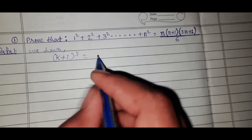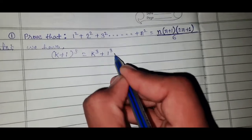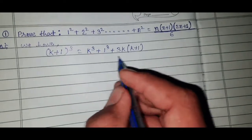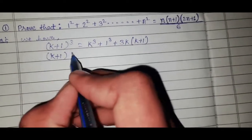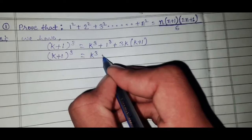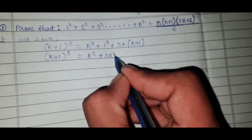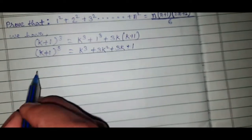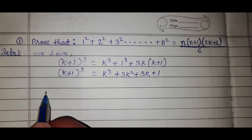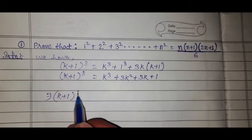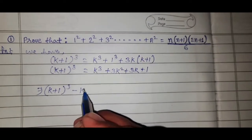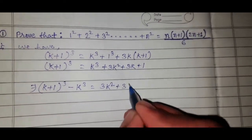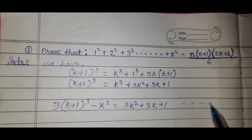We have (k+1)³ = k³ + 1³ + 3k(k+1). Expanding: (k+1)³ = k³ + 3k² + 3k + 1. Also, 1³ = 1. Now (k+1)³ minus k³ gives us 3k² + 3k + 1.